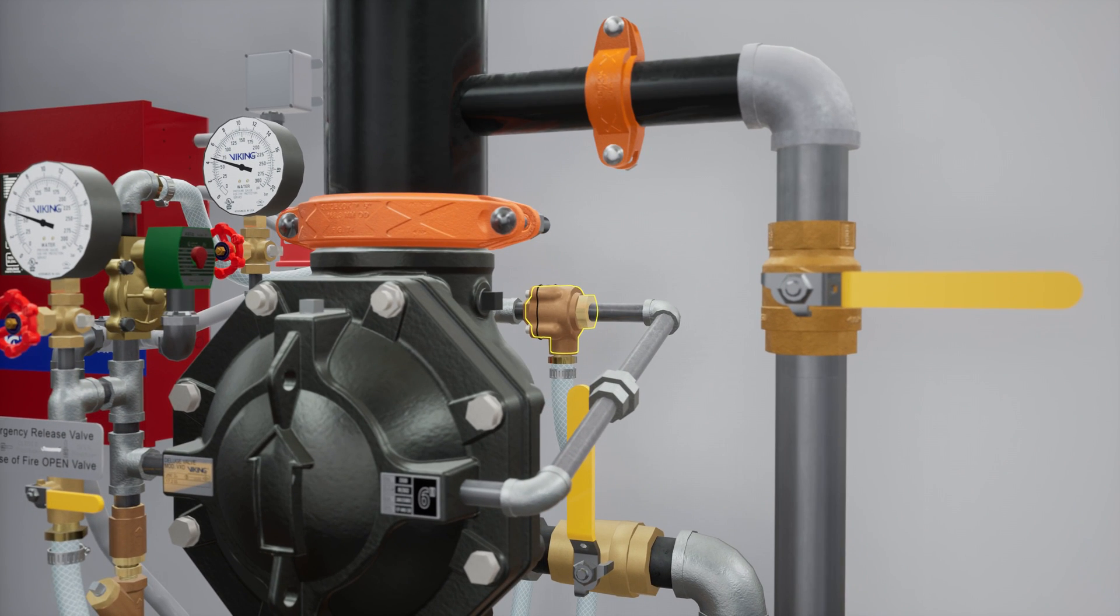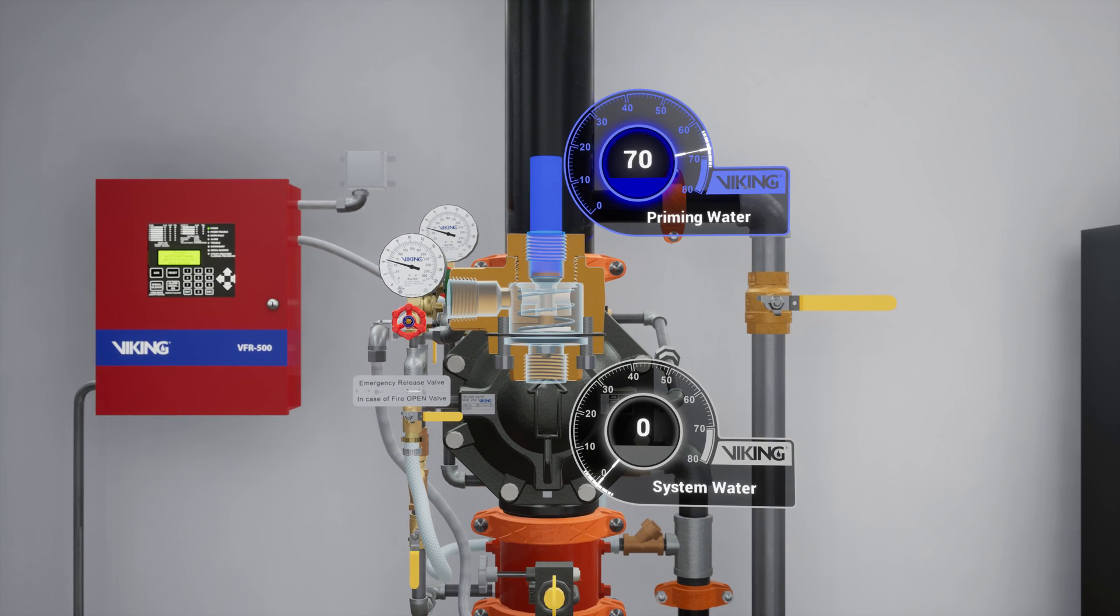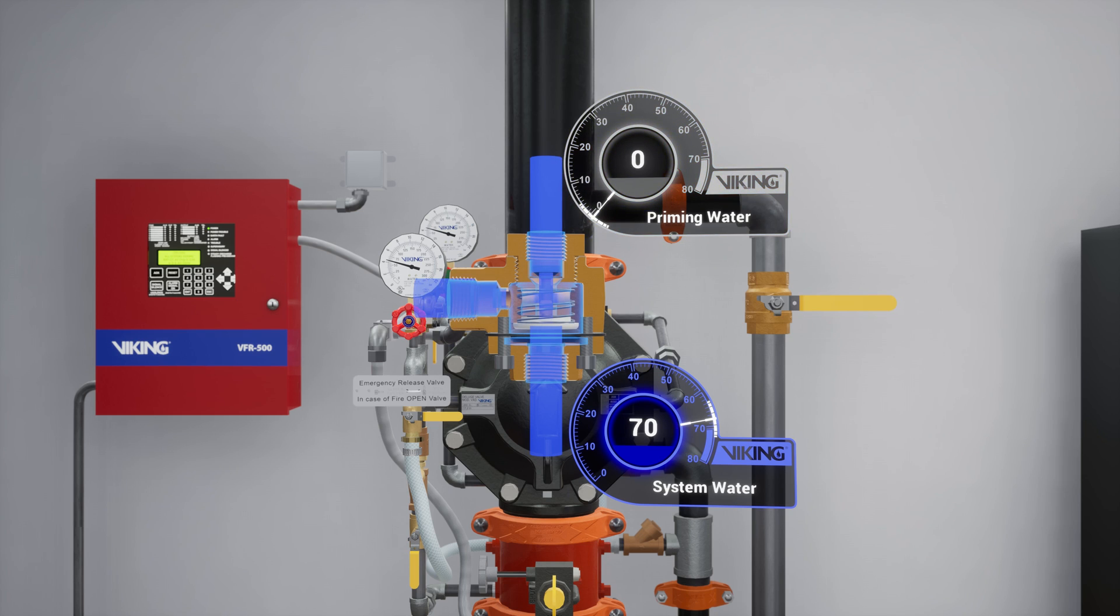Following the trim off the prime chamber is the pressure operated relief valve or PORV. The PORV is a device that ensures the valve remains in an open state while water is flowing through the valve. When water is directed to the sensing side of the PORV, the push rod is forced open. Priming water is then directed to the open drain, preventing the priming chamber from repressurizing.